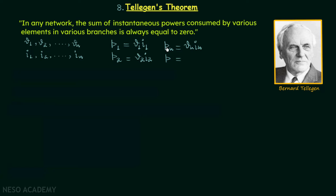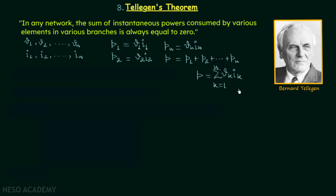To find the total instantaneous power, we add the individual instantaneous powers: P = p1 + p2 + ... + pn. Since p1 = v1·i1, p2 = v2·i2, and so on up to pn = vn·in, we can write P as the summation of vk·ik for k equal to 1 to n. According to Tellegen's theorem, this total instantaneous power equals zero.